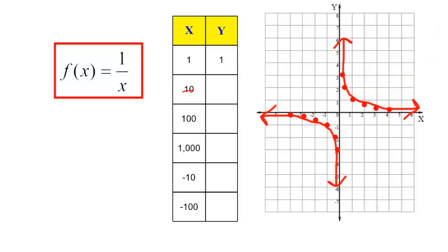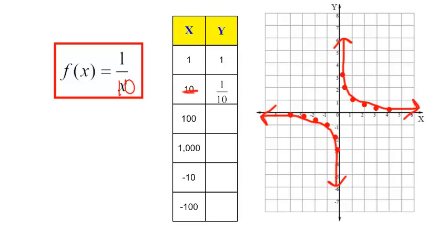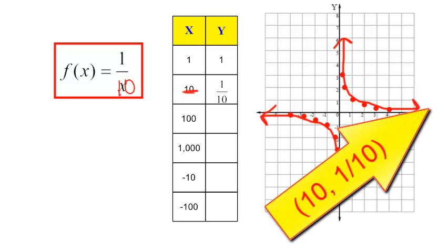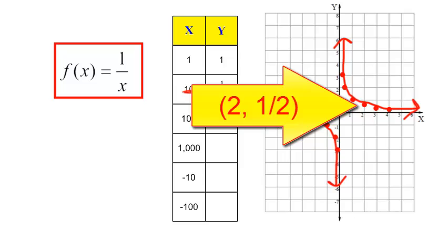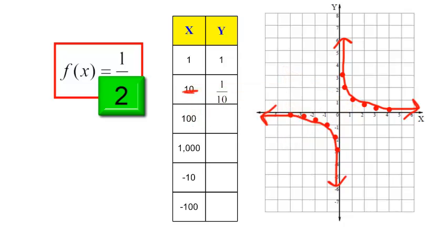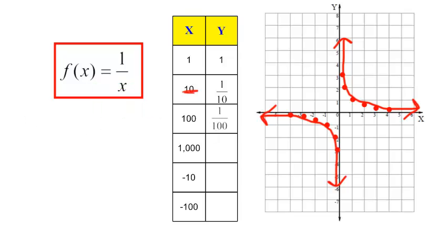If x is 10, then f of x, or y, would be 1 over 10, which is 1 tenth. If I go way down to 10 on the x-axis, I go up just a little bit to 1 tenth. If x is 2, y is 1 over 2, or 1 half — that would be the point (2, 1 half). If x is 100, y is going to be 1 over 100, which is 1 hundredth. If I go way down to 100, I go just a little bit above to 1 hundredth.